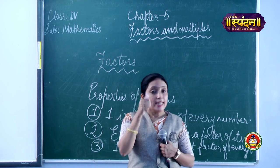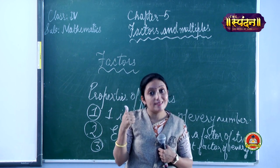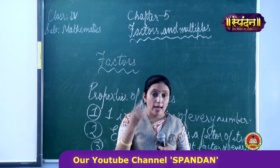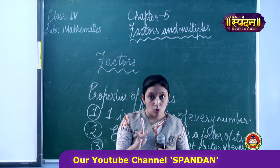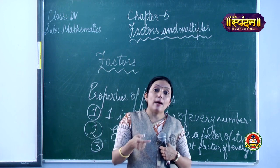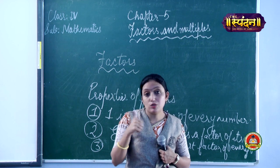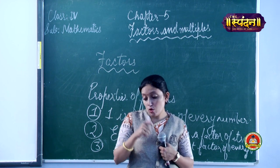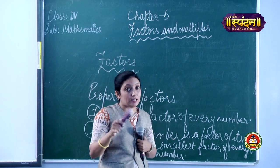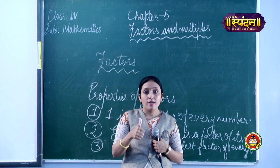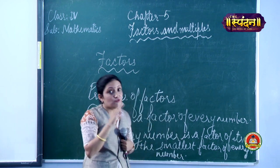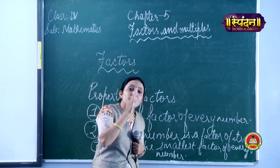And which is the largest factor? The number itself. For 18, the last factor was 18. For 4, it was 4. For 8, the factors are 1, 2, 4, and 8 — the last is 8. So the fourth property is: the greatest factor of any number is the number itself. If I ask you the greatest factor of 18, it is 18. Of 20, it is 20. Of 100, it is 100.